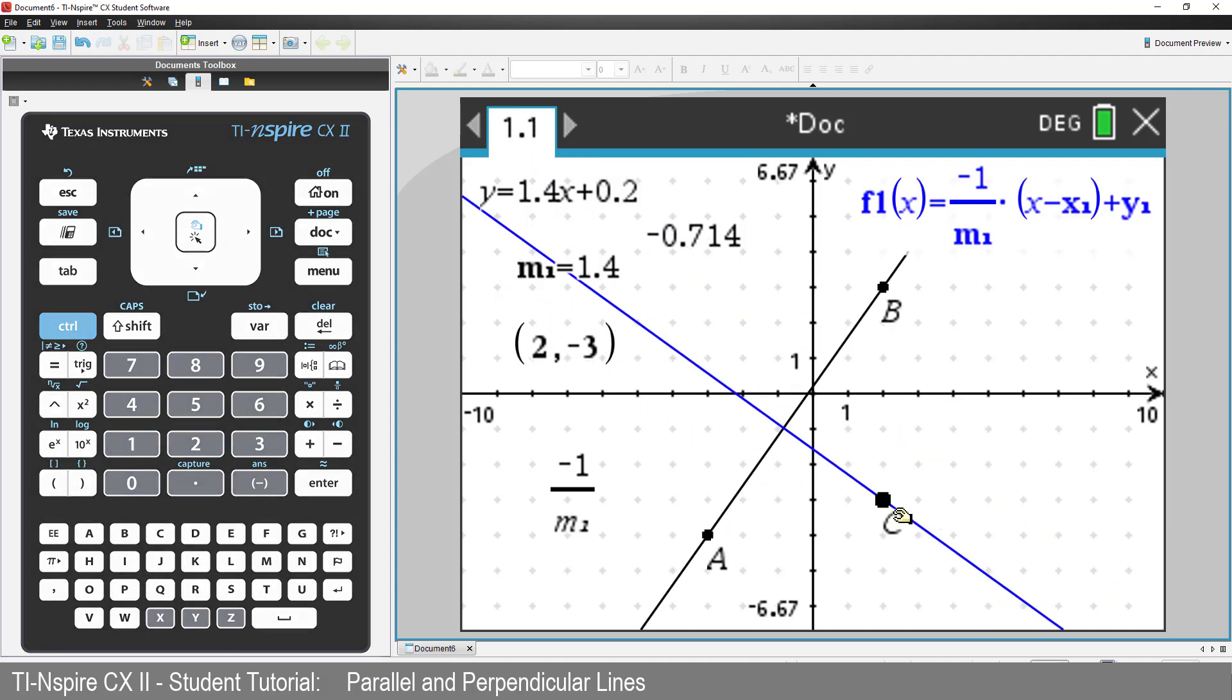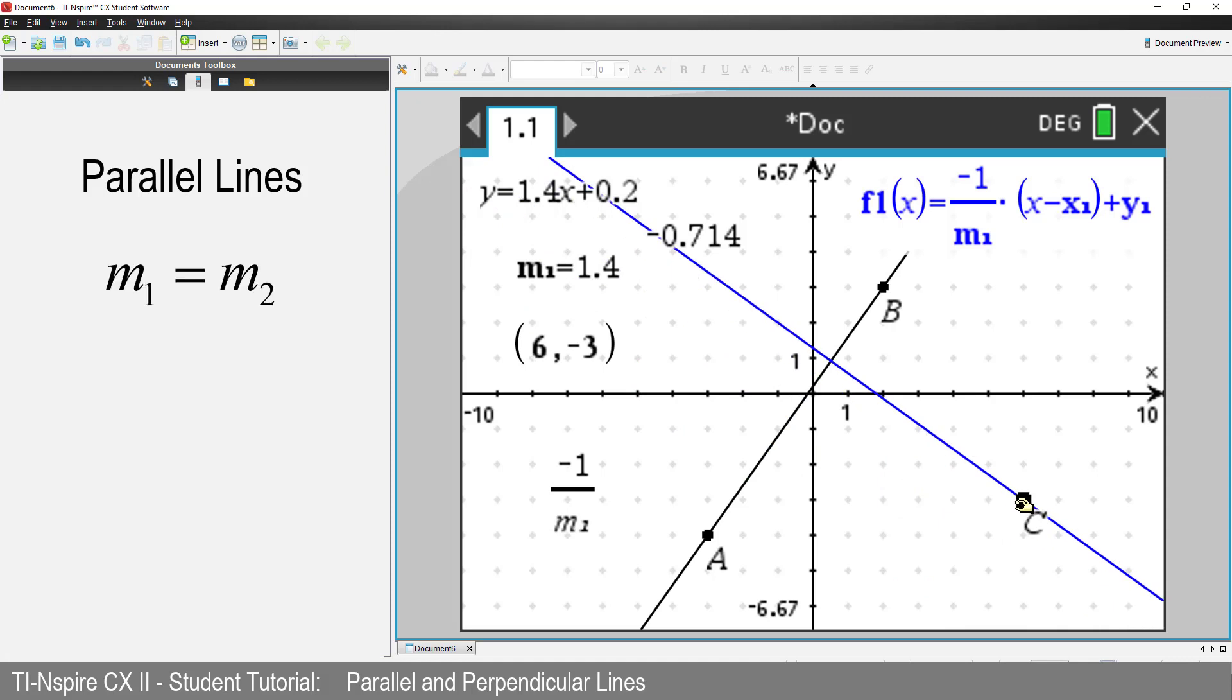So to summarize, parallel lines have the same gradient. Perpendicular lines have a product of their gradients equal to negative 1.